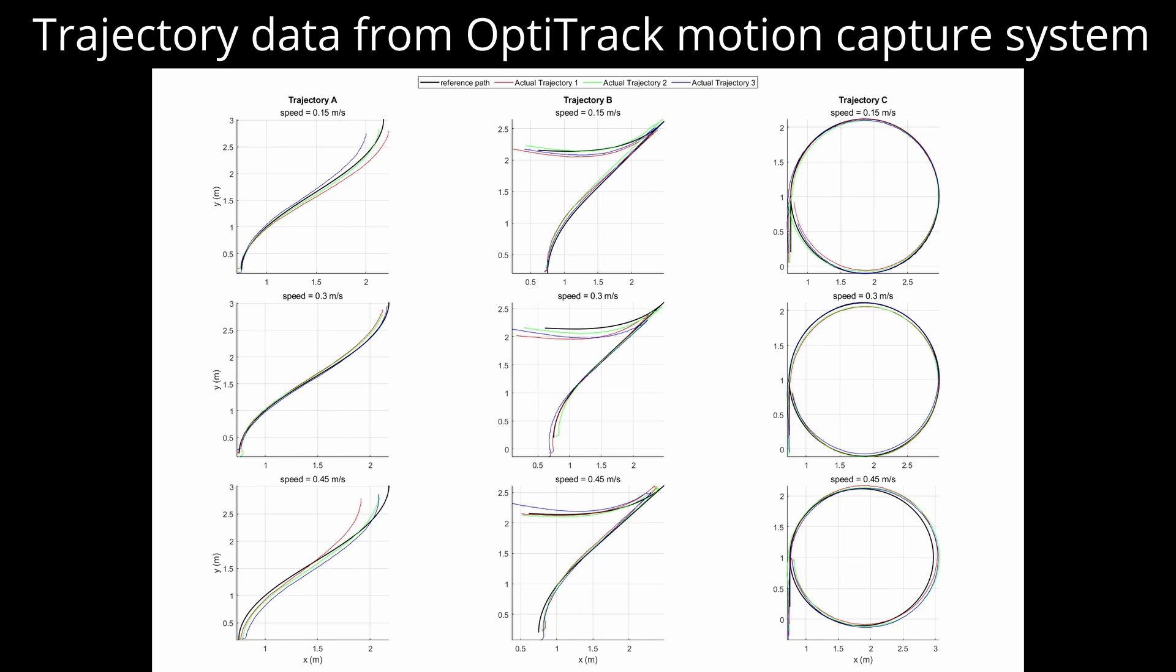The robot's position and orientation were recorded using an OptiTrack motion capture system with infrared reflective markers. The accurate trajectory tracking results with open-loop control highlight the accuracy of the kinematic model of the robot.